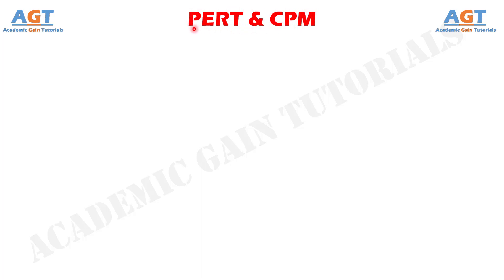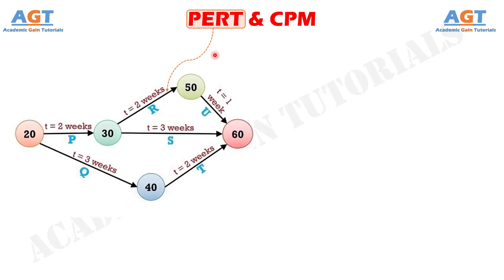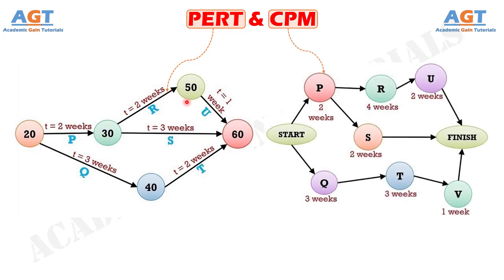Program or Project Management and Review Technique, PERT, is appropriate for the projects where the time needed to complete different activities are not known. On the other hand, the Critical Path Method or CPM is appropriate for the projects which are recurring in nature.